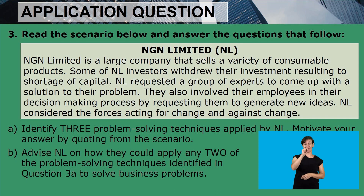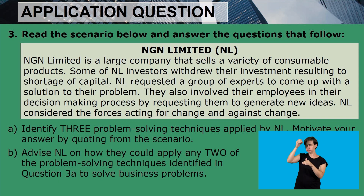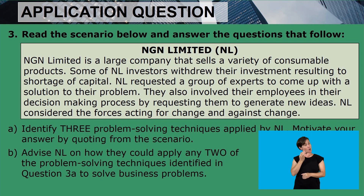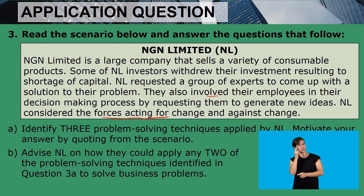NGN Limited, which is NL, is a large company that sells a variety of consumable products. Some of NL's investors withdrew their investment, resulting in a shortage of capital. NL requested a group of experts to come up with a solution to their problem. They also involved their employees in the decision making process by requesting them to generate new ideas. NL considered the forces acting for change and against change.